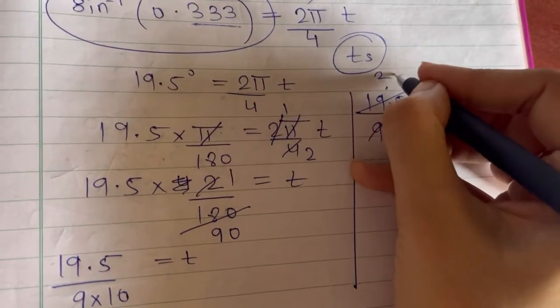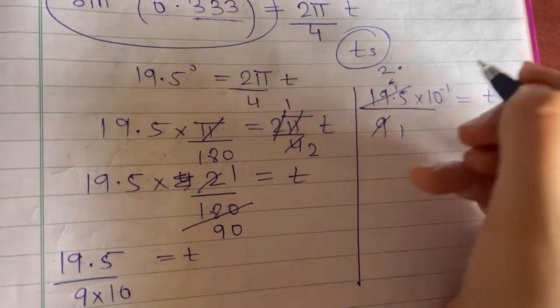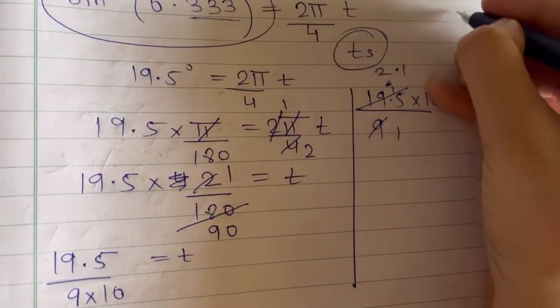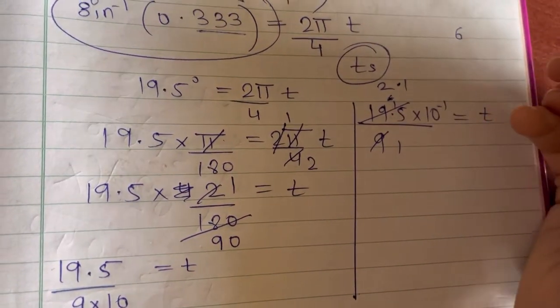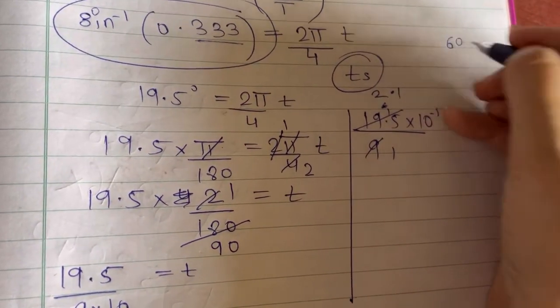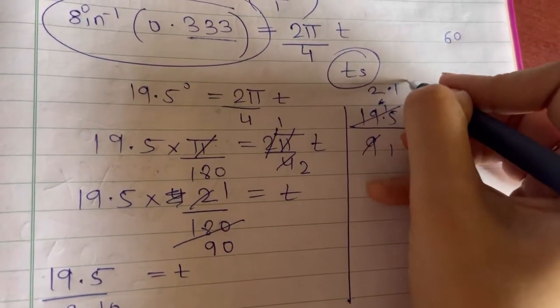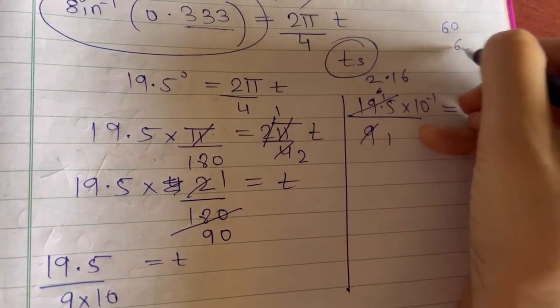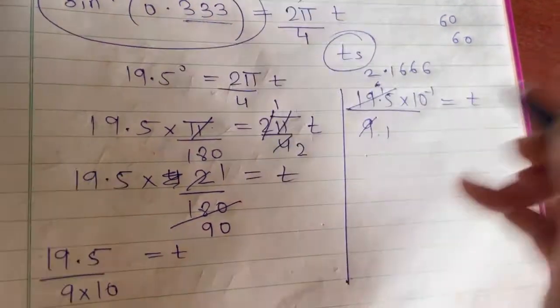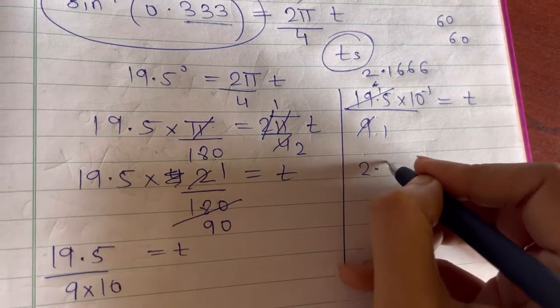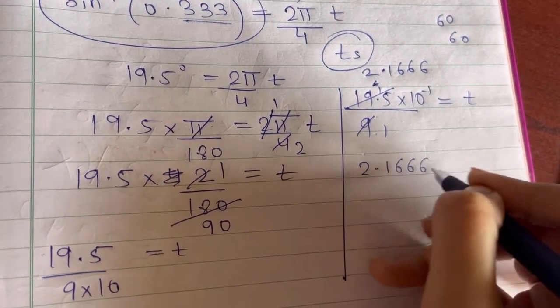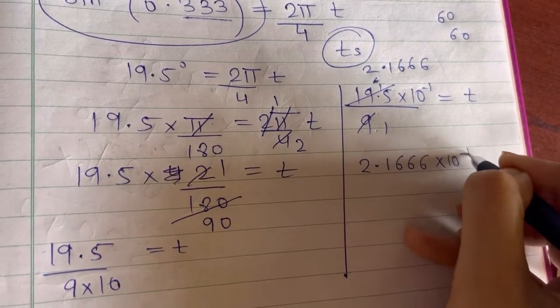9 2s are 18 point. This becomes 15. So again 9 1s are 9. So you have 6 left with you. Because of point that becomes 60. 9 6s are 54. So again 60 is left with you. So this continues. So it is 2.1666 into 10 raised to minus 1 that is equal to t.